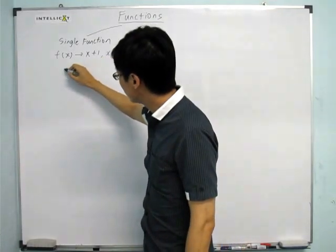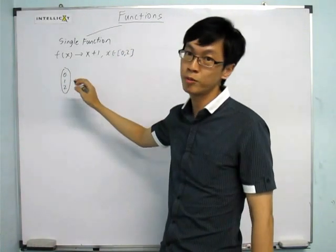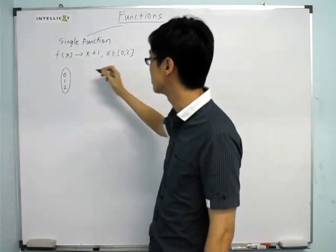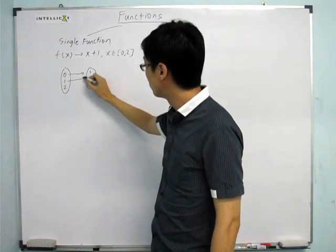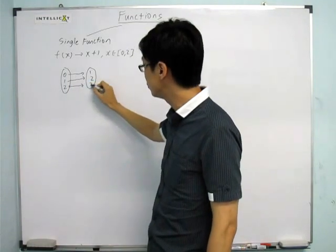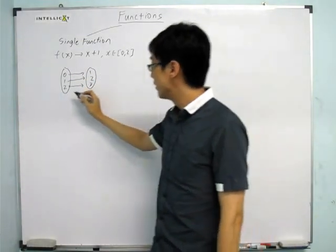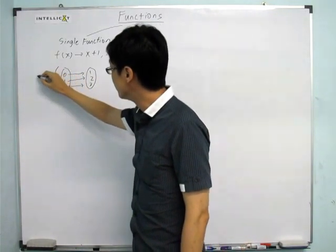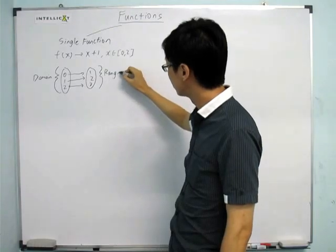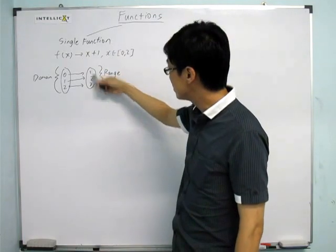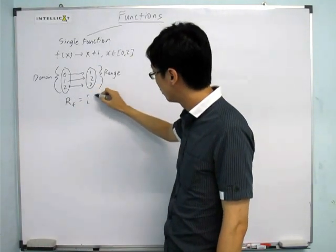So how does the function work? Basically, x could take values like 0, 1, 2. From 0 + 1, it will give you 1. 1 + 1 will give you 2. And 2 + 1 will give you 3. This is what functions do — functions will map the values here into another value. This thing here is called the domain, and these values here are called the range. We can write the range of f as [1, 2, 3].